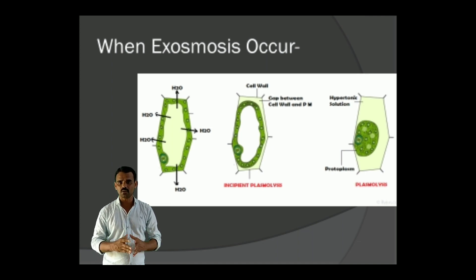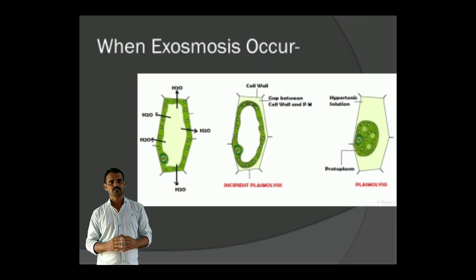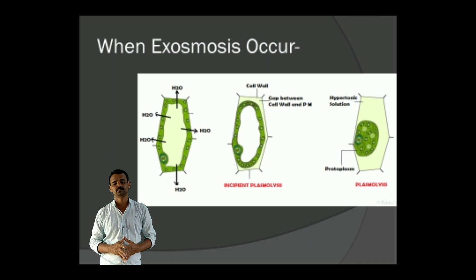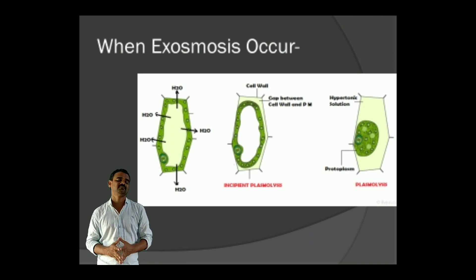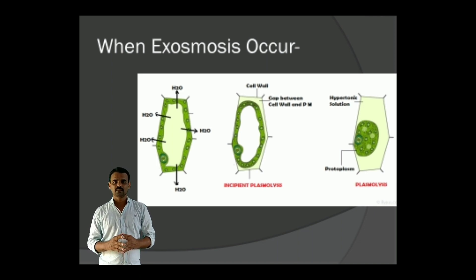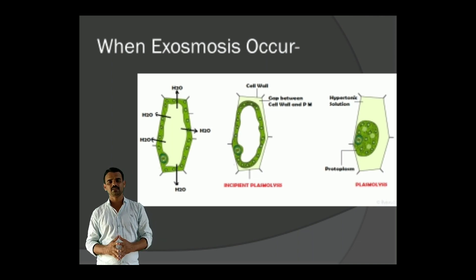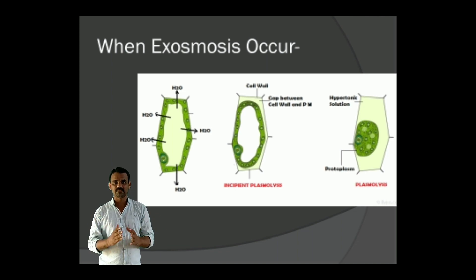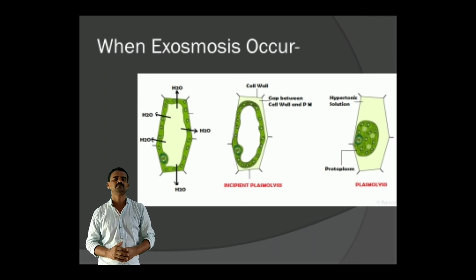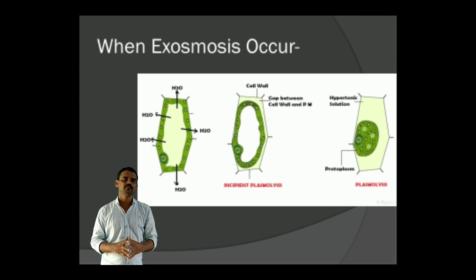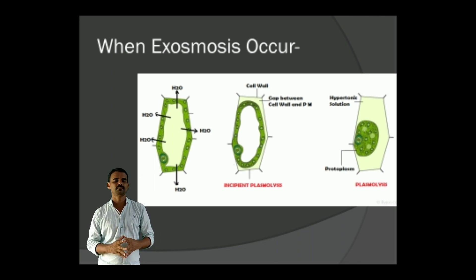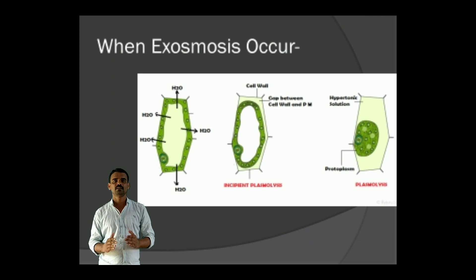When Exosmosis occurs, the Turgor pressure of the protoplasm decreases. Due to that, as the Plasma membrane is elastic in nature, it shrinks — it leaves its original place and moves away from the cell wall. Thus a gap is created between the cell wall and the Plasma membrane. This phenomenon is known as incipient Plasmolysis.